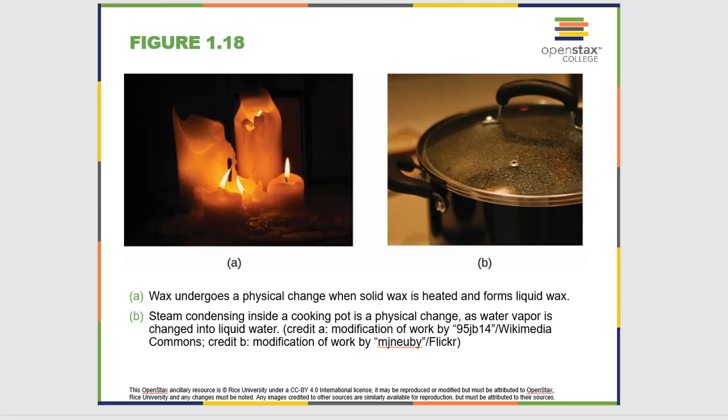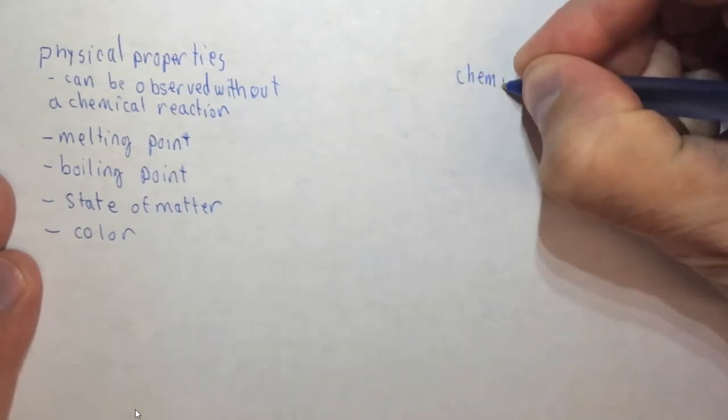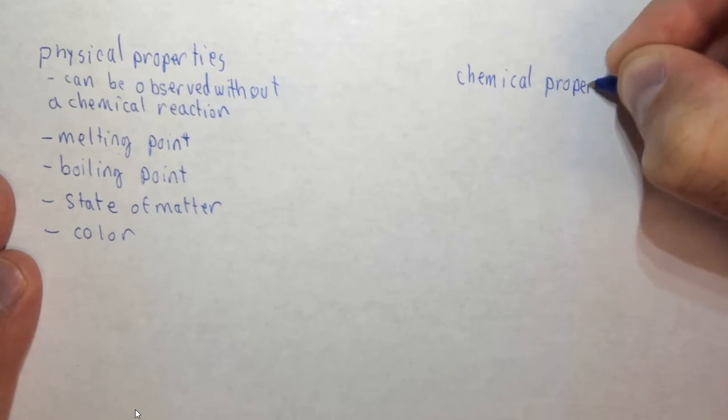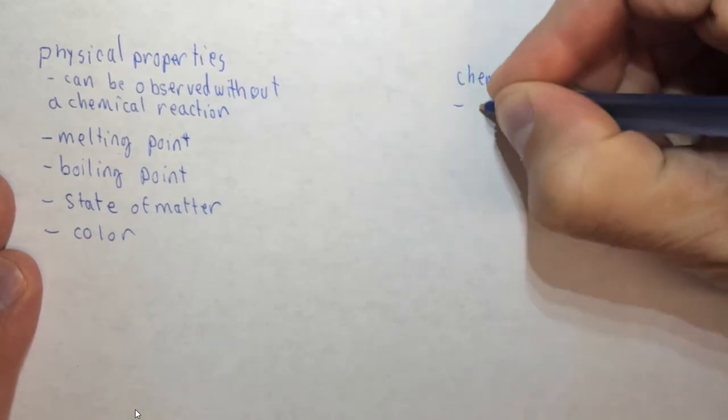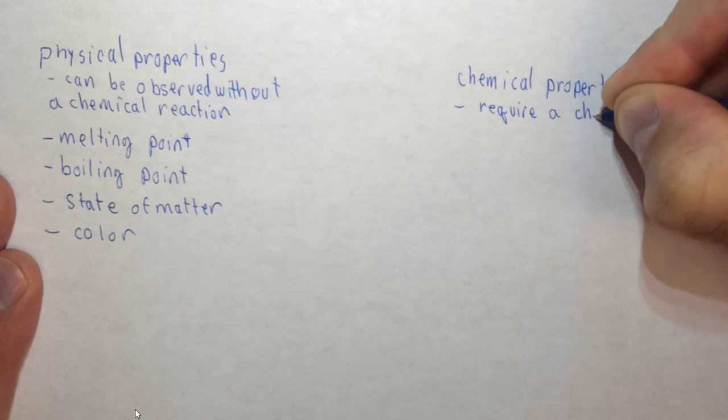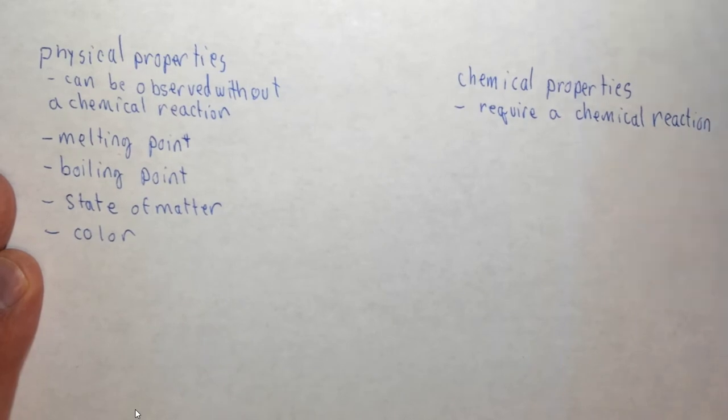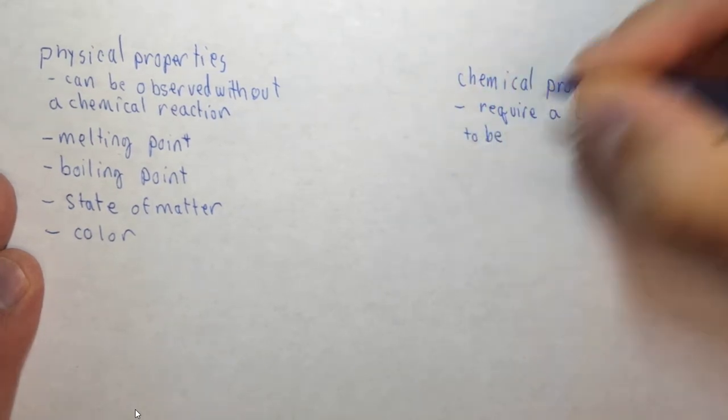So physical properties can be distinguished from chemical properties. So on the next slide we have an example of iron metal and then rust. And we all know that iron can turn into rust. Well the fact that iron rusts is a chemical property. So chemical properties require a chemical reaction to be observed.